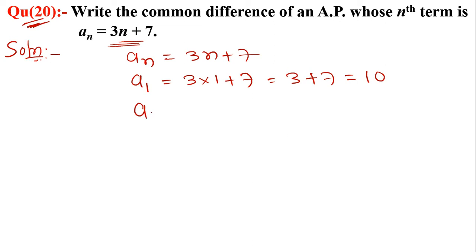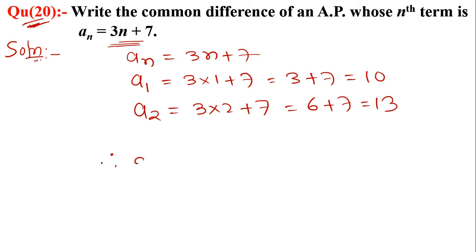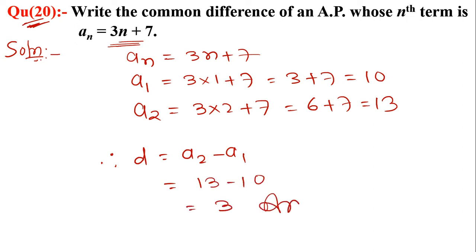Now we put the value of n = 2: 3 × 2 + 7 = 6 + 7 = 13. Therefore, the common difference d = second term − first term = 13 − 10 = 3, which is the required answer.